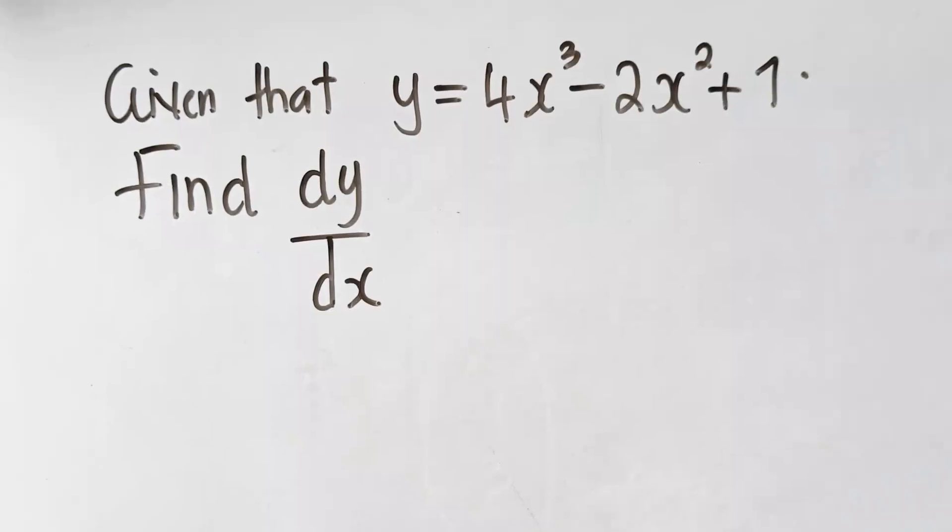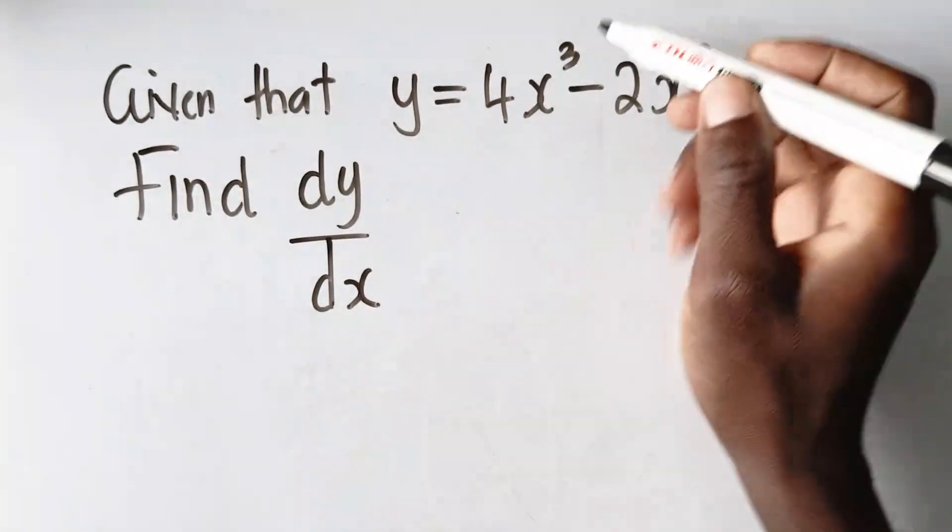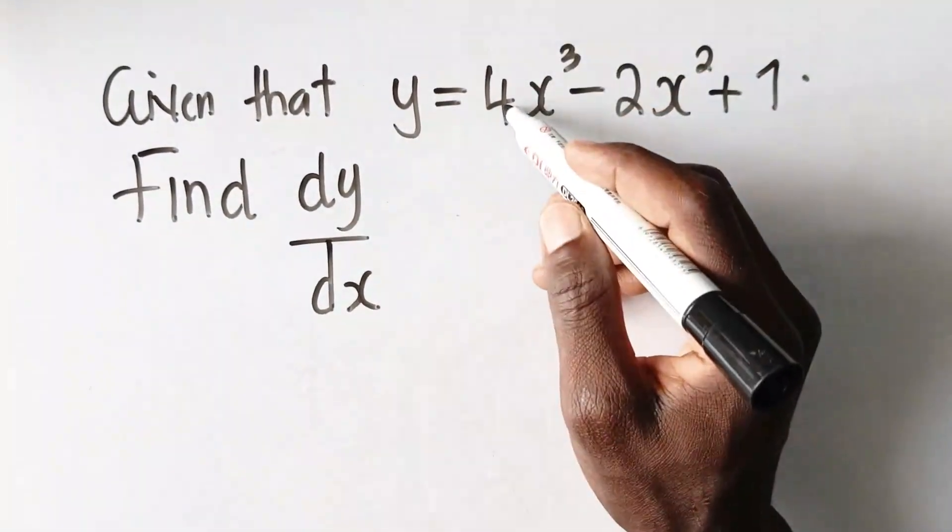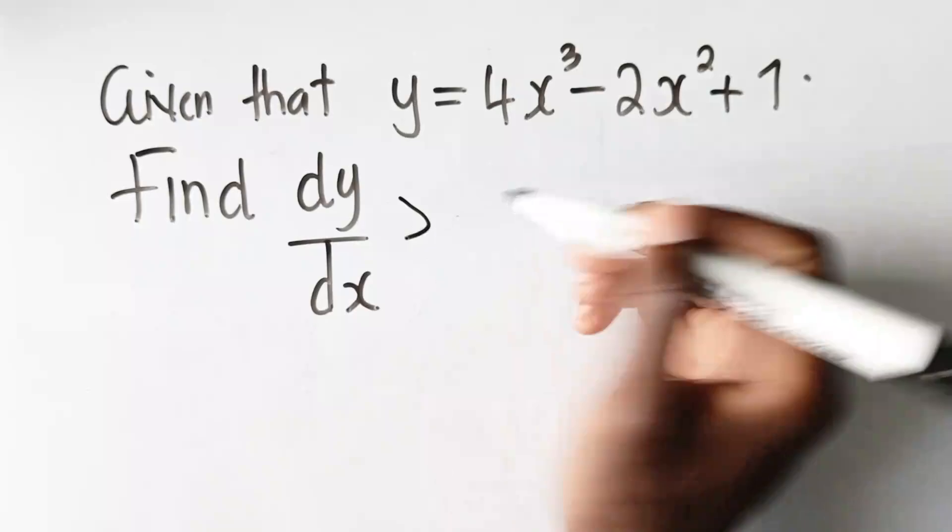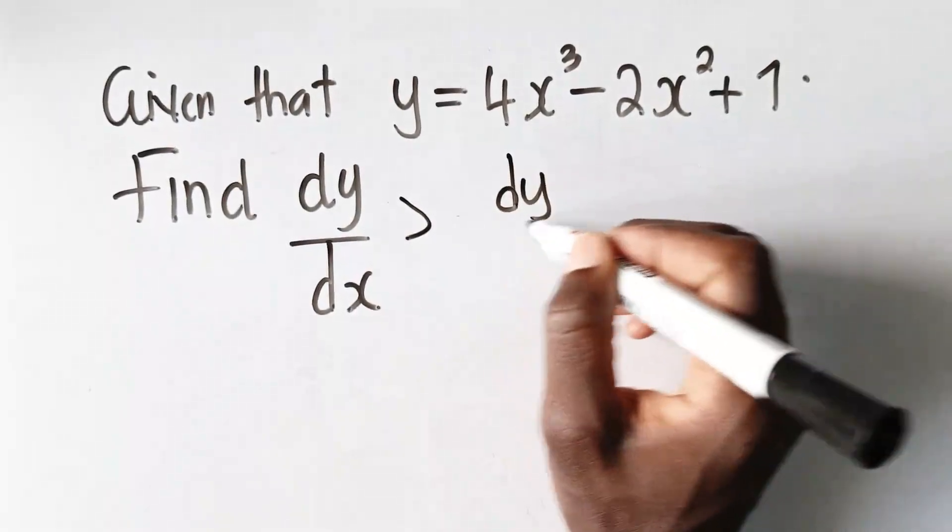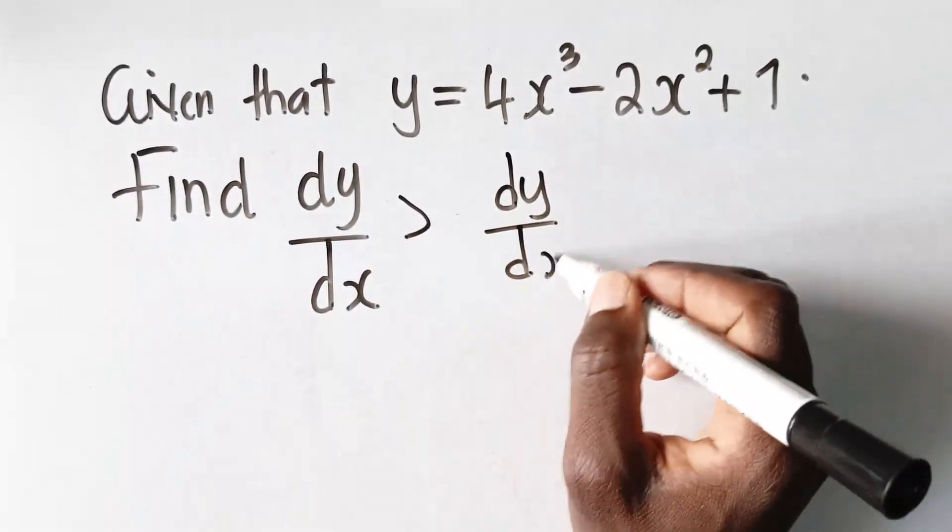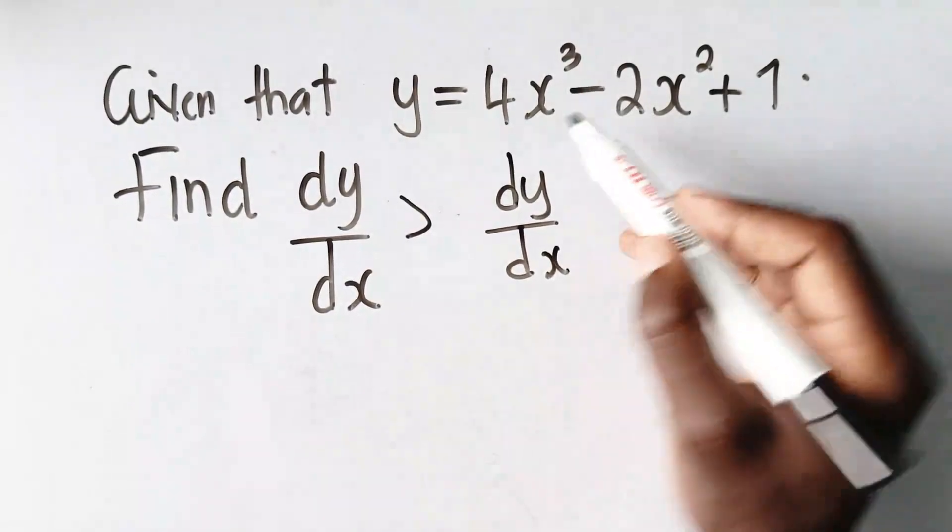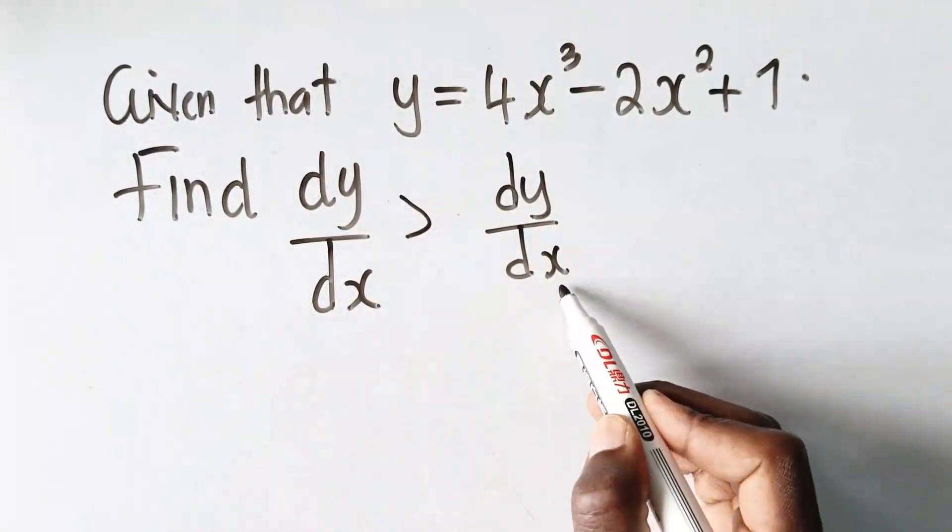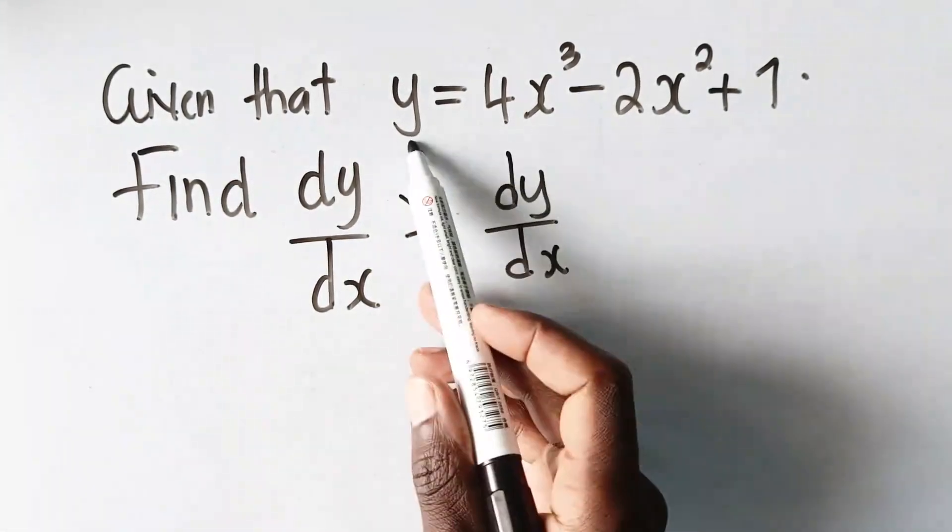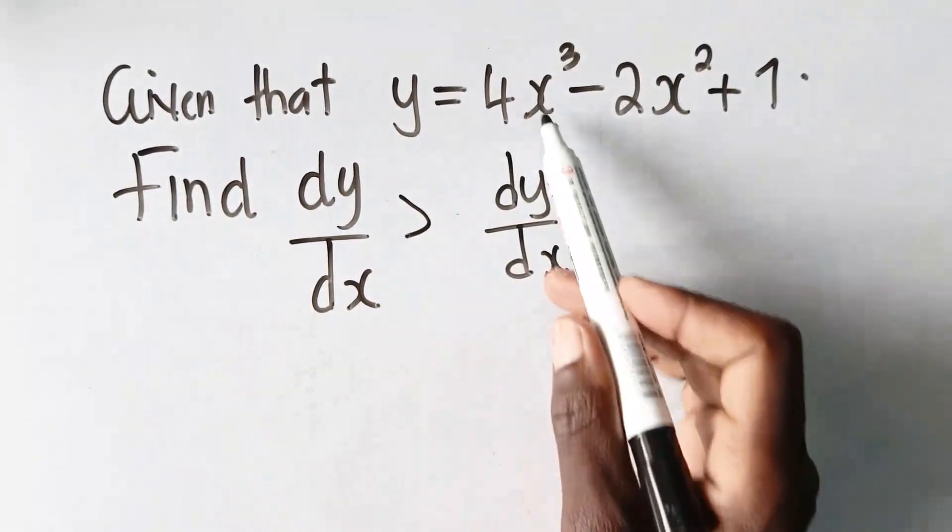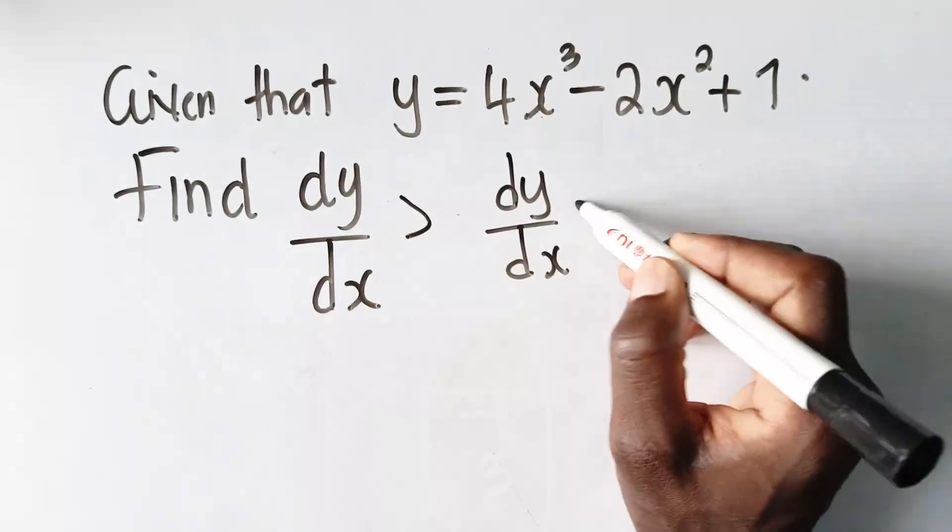Then, before you even reduce that, get the original power multiplied by the base. What am I trying to say? So, in this case, dy dx, which is differentiating this one with respect to x. This is how you say it. We are differentiating the function y with respect to x, because there's x there.